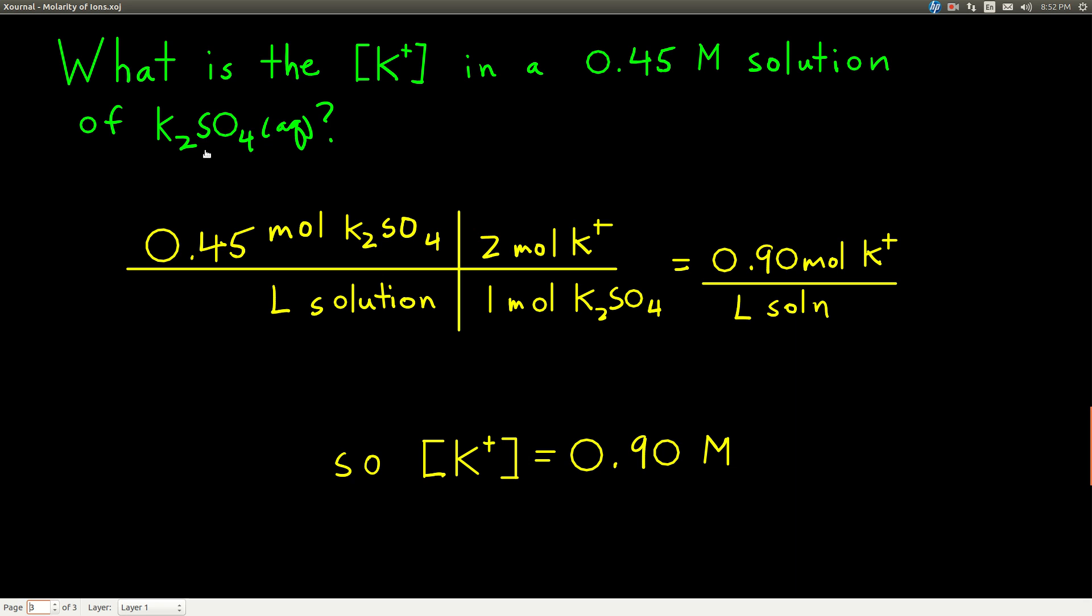Well, first of all, what does potassium sulfate break apart into? Well, you can look at the formula and tell. You know that potassium is the metal, so that's going to be the cation. This 2 here tells you that there are going to be 2 potassium ions, just like there were 3 nitrates in iron 3 nitrate. There are 2 potassiums and 1 sulfate, but we only care about the potassium here.